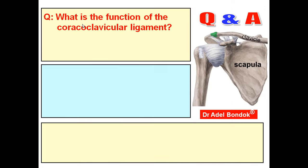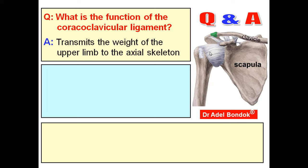Quiz: What is the function of the coracoclavicular ligament? It is a very important ligament. The coracoclavicular ligament transmits the weight of the upper limb to the axial skeleton, via the chain: upper limb → scapula → coracoclavicular ligament → clavicle → axial skeleton.